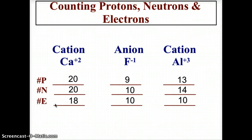To summarize: calcium plus 2 has 20 protons, 20 neutrons, and 18 electrons. Fluorine has a proton number of 9, neutron number of 10, and electron number of 10. And aluminum has 13 protons, 14 neutrons, and 10 electrons.